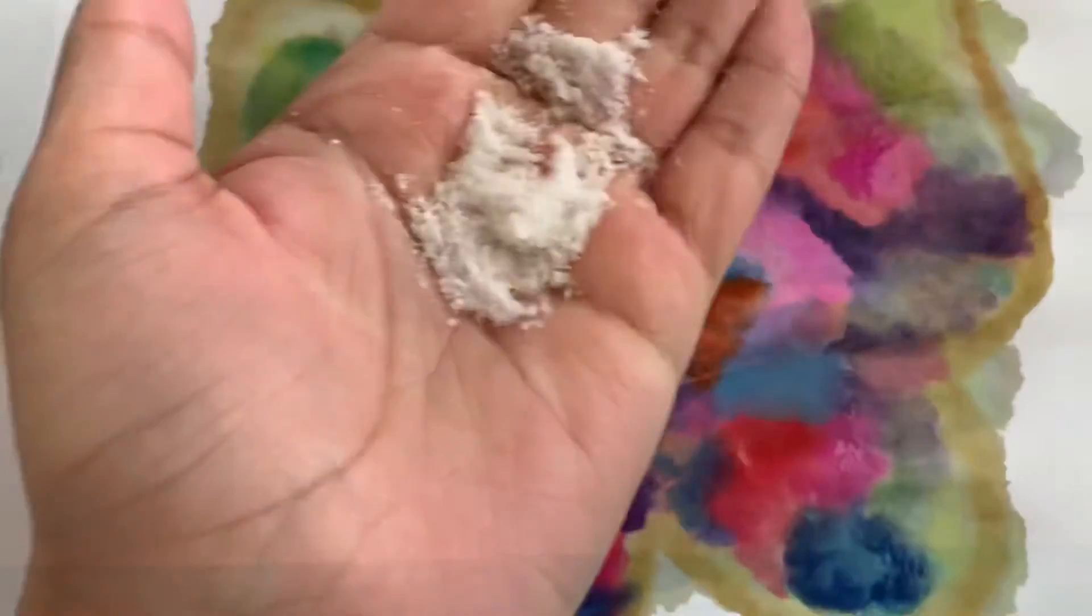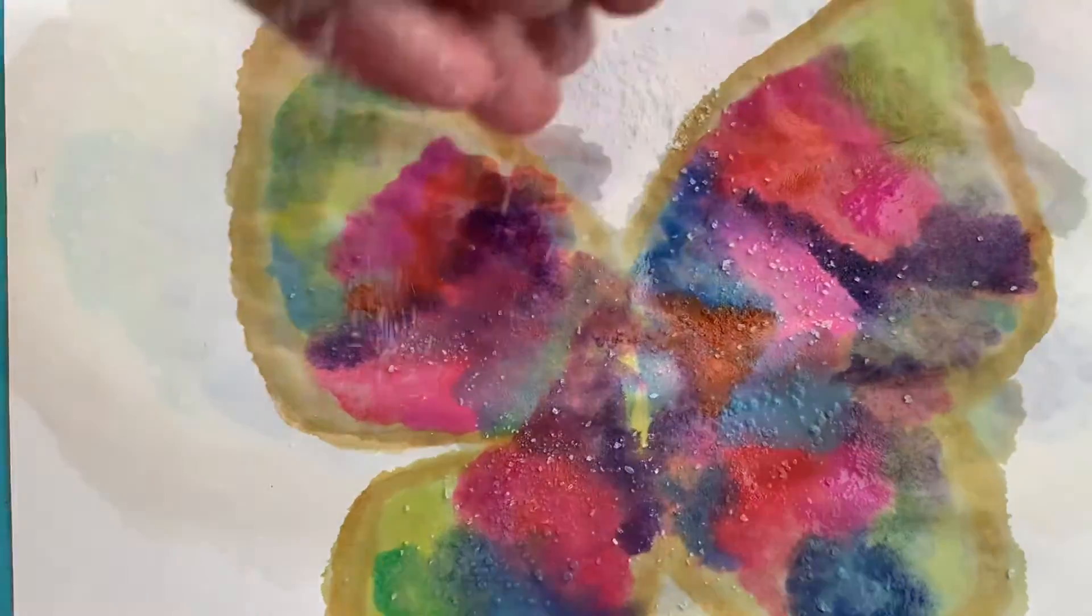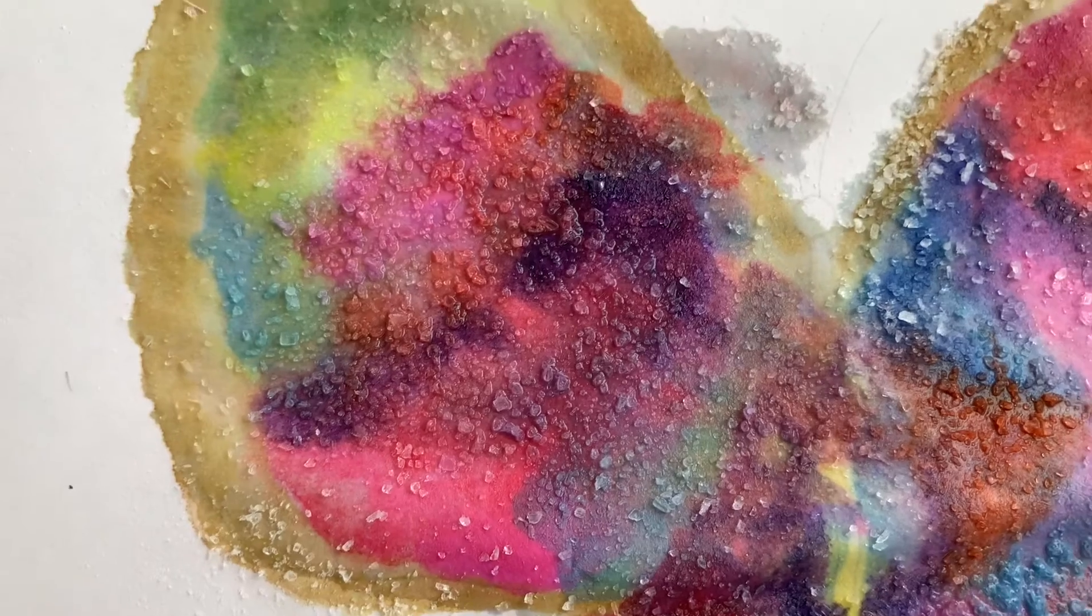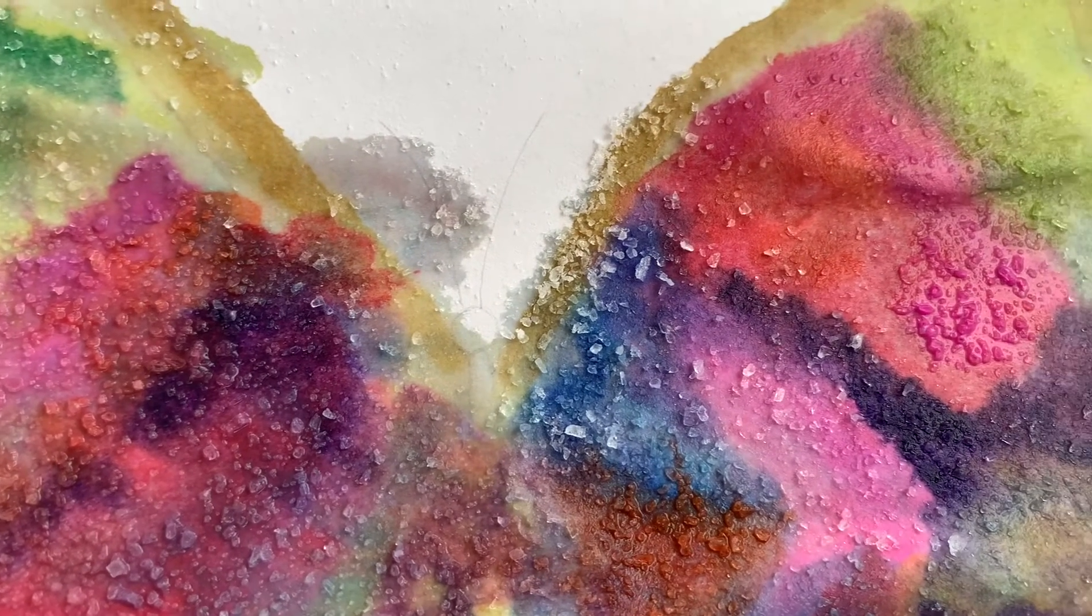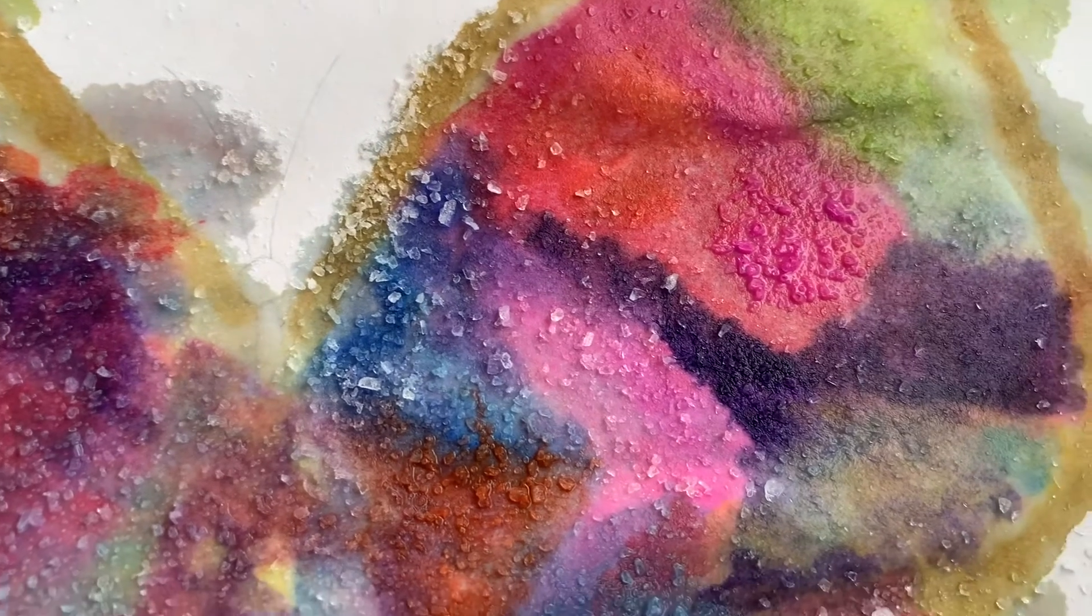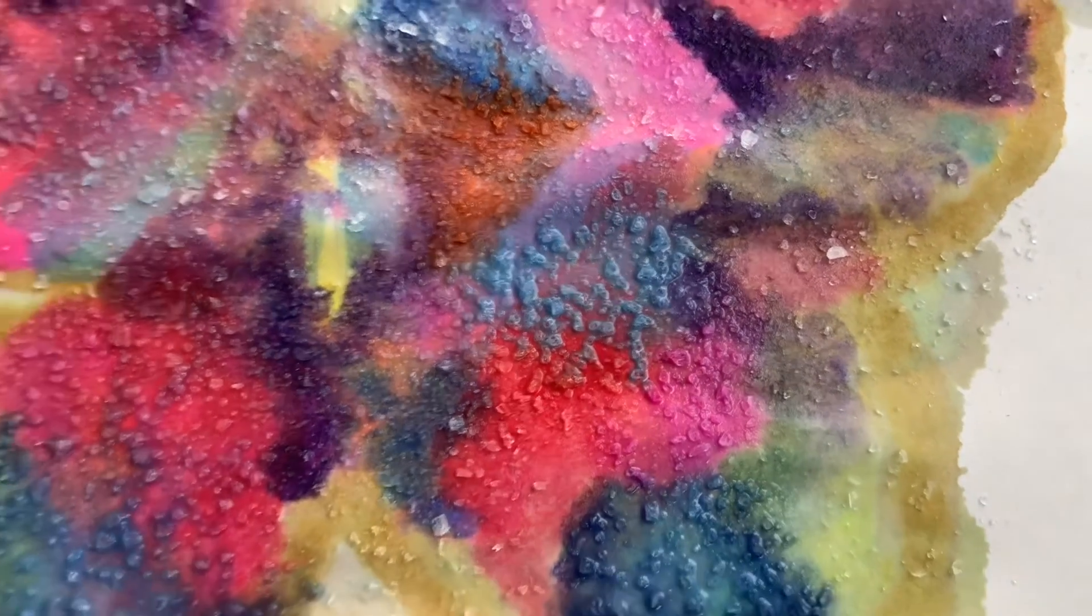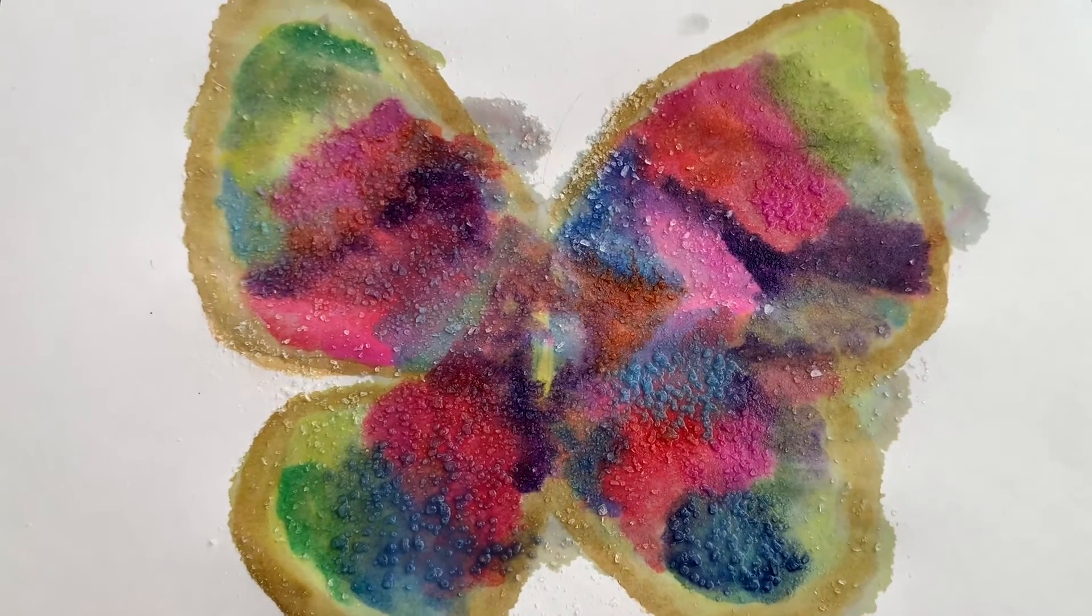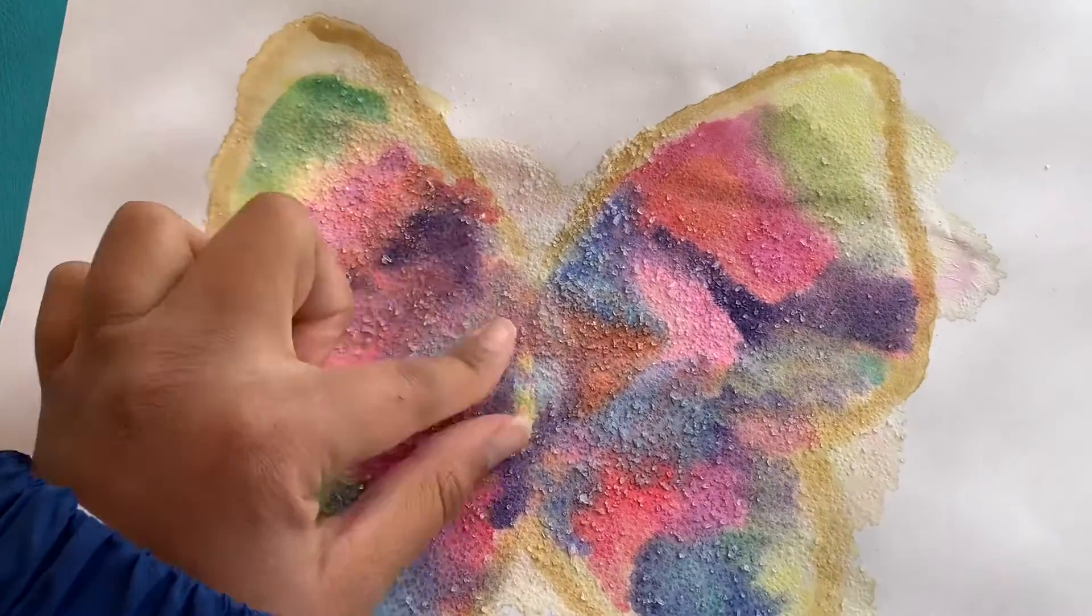Once you put in all your colors, you're going to sprinkle some salt on top of your painting like so. This is not only going to help the painting dry, but it's also going to help blend in the colors and not mix them together so they don't look muddy. It's also going to create an effect the next day. So you're going to let it dry overnight. And the next day, you should have something like this.